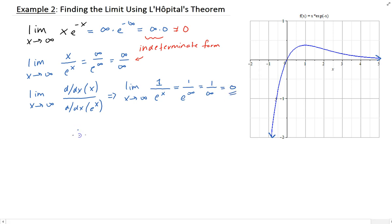Therefore, the original limit of x times e to the negative x as x goes to infinity is 0. That's what you see from the graph here. This is the graph of x times e to the negative x, and as x gets larger, the y values approach 0.